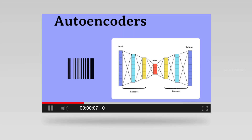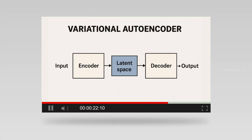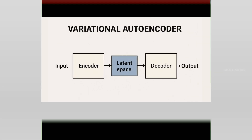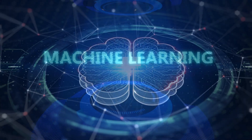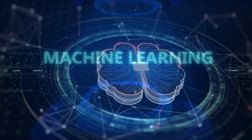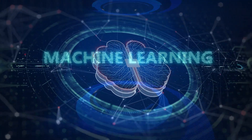Hi, in this video we will talk about autoencoders and variational autoencoders. We will talk clearly about the differences between them and discuss deep concepts in machine learning.